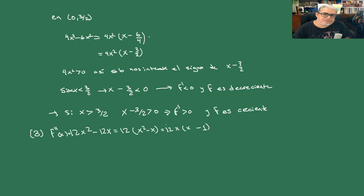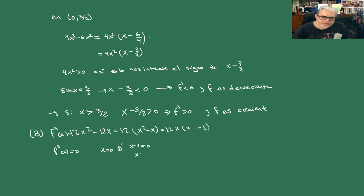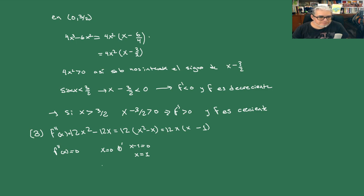¿Por qué la escribimos así? Porque aquí ya está cantado cuándo f''(x) = 0: por ejemplo en x = 0, el producto completo es cero, o bien x - 1 = 0, que quiere decir x = 1. Entonces hay punto de inflexión en x = 0 y en x = 1. x = 0 tiene una singularidad que vale para las derivadas de orden 2.